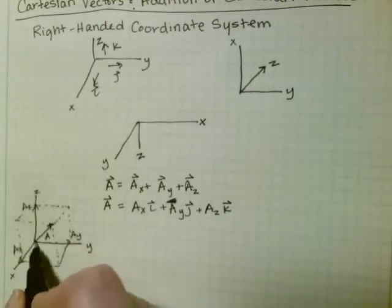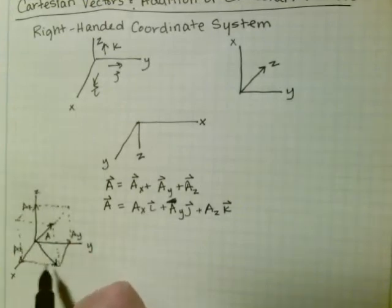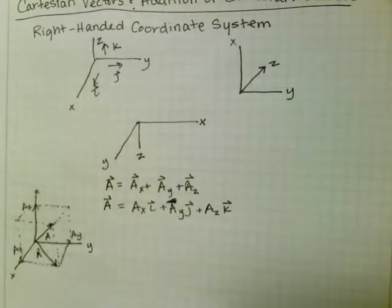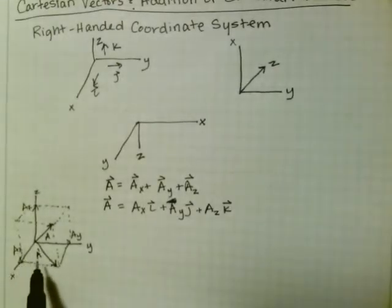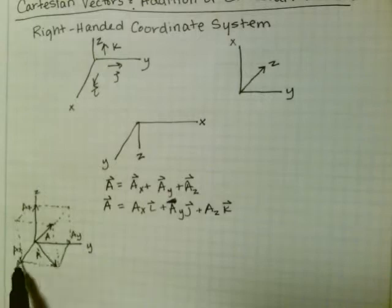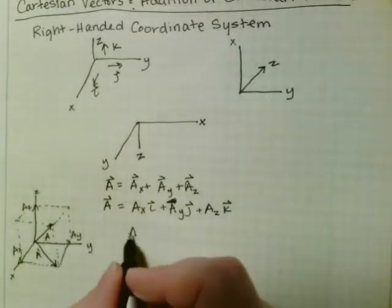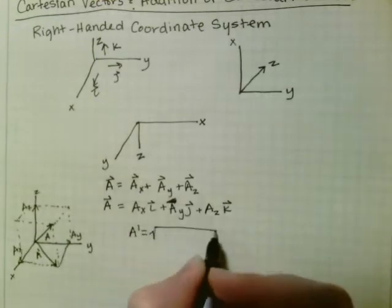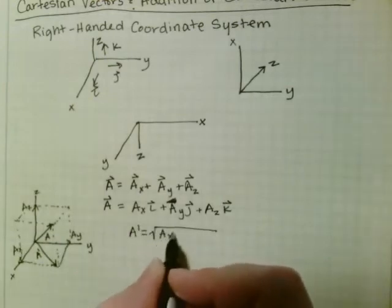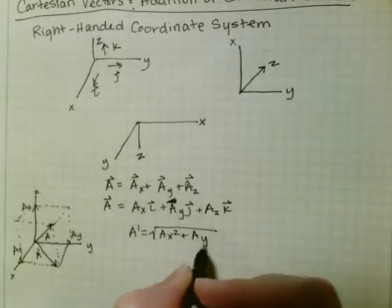Okay, so a projected onto the x-y axis gives us a prime. So a prime is a right triangle, right? So this is ay, and this is ax. So we can get that a prime is equal to the square root of ax squared plus ay squared.